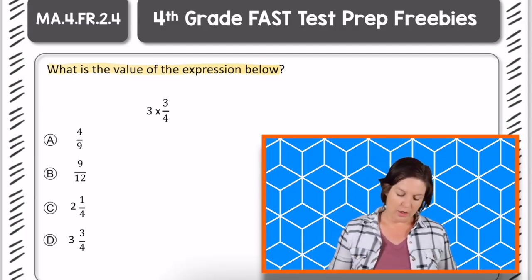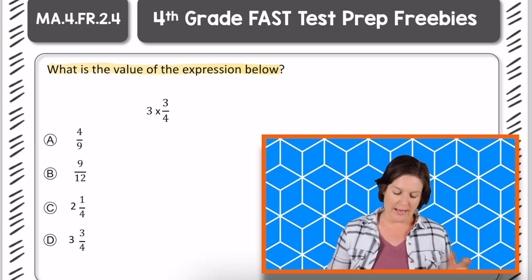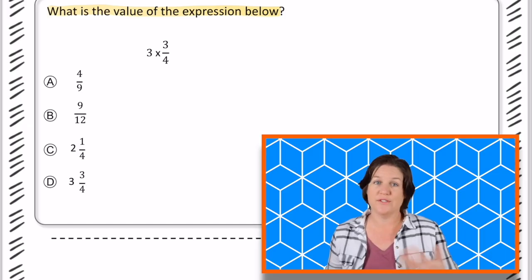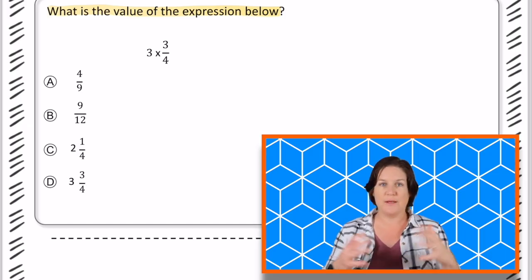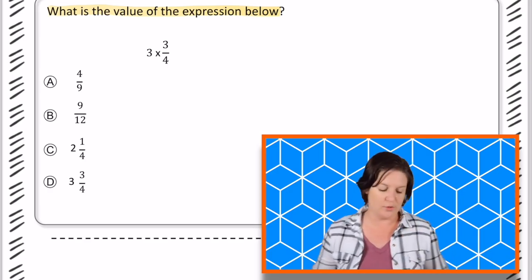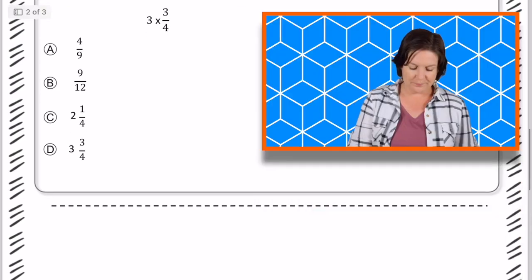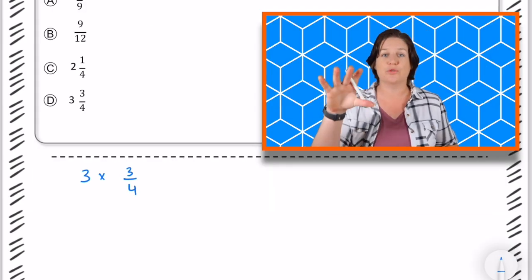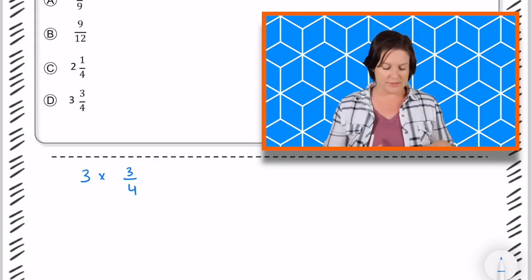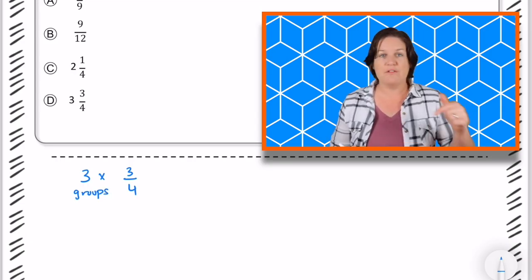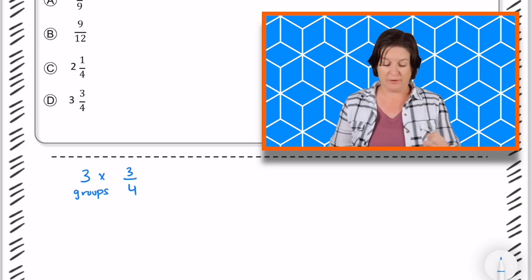Now, I'm going to go with the when in doubt, draw it out strategy first, and then I'll show you also the standard algorithm that you can do. So depending, you may have solved it a different way, but I'm going to go ahead and show you two ways that I would suggest doing this. So I know that 3 times 3/4, when we're multiplying, we have groups of equal things. That means that we would have 3 groups with 3/4 in each group. So if I draw that out, I would need 3 groups representing 3/4. So here's one group.